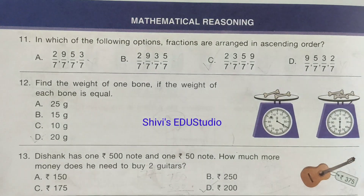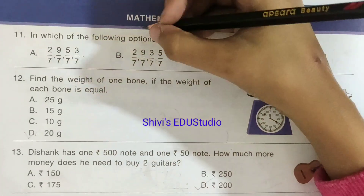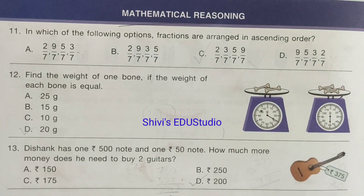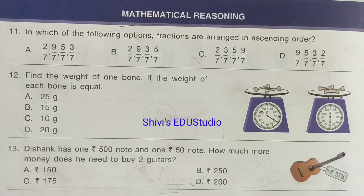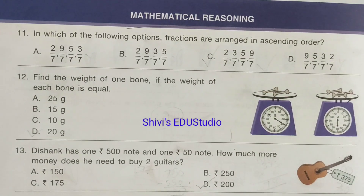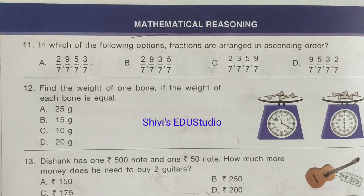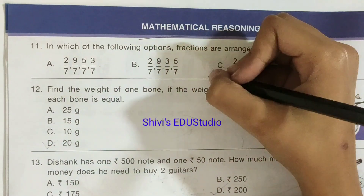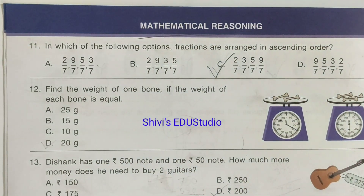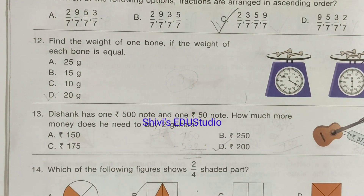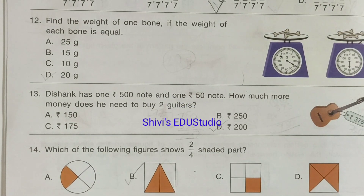Now we move to the second section: Mathematical Reasoning. Question number 11: Which of the following options shows fractions arranged in ascending order? The ascending order option is the right answer.